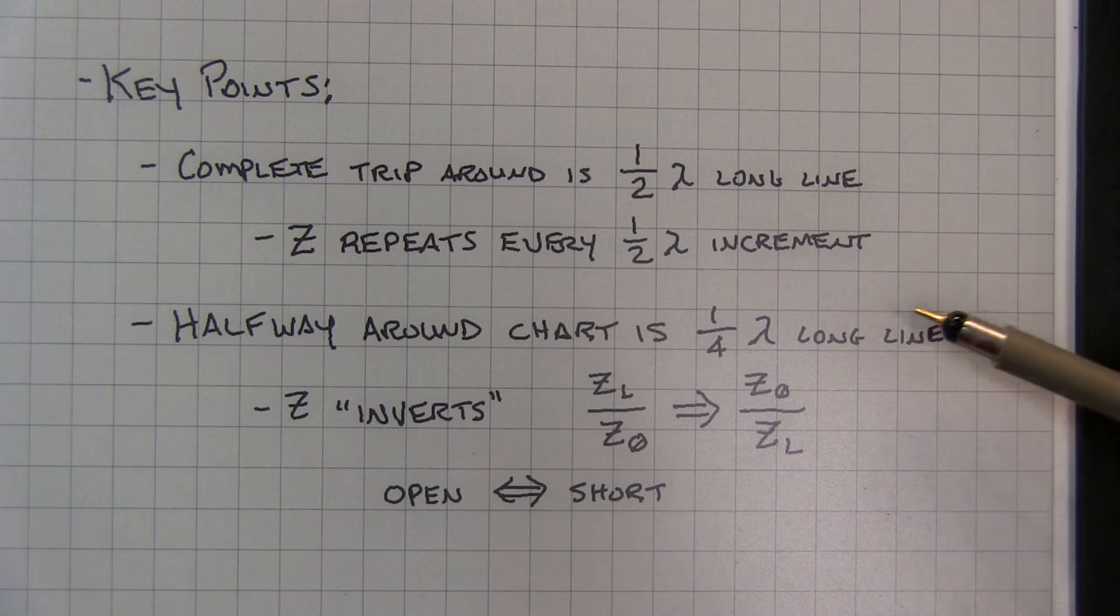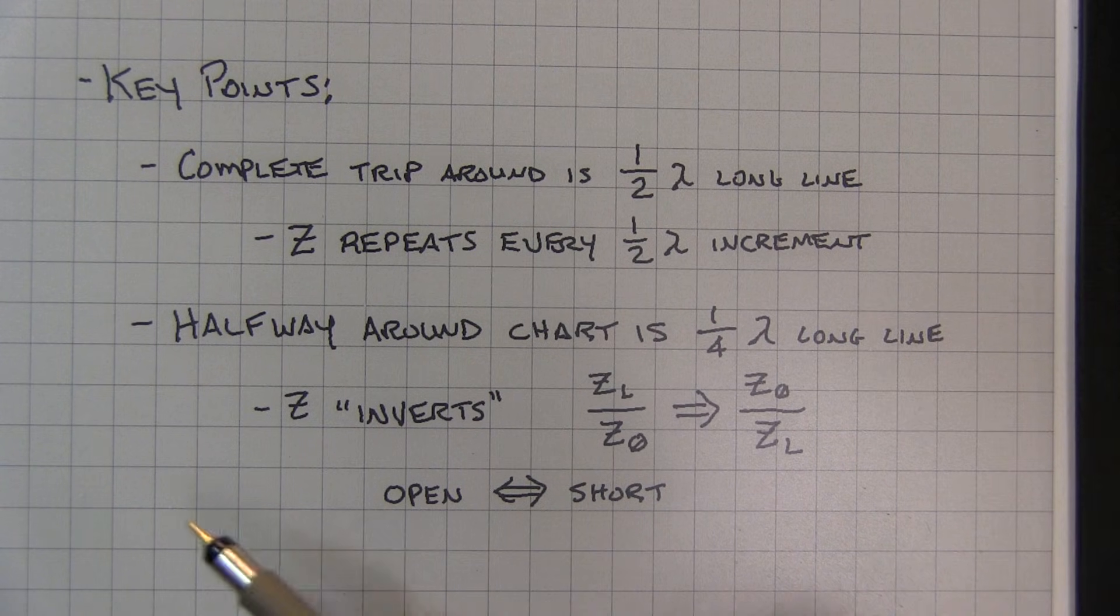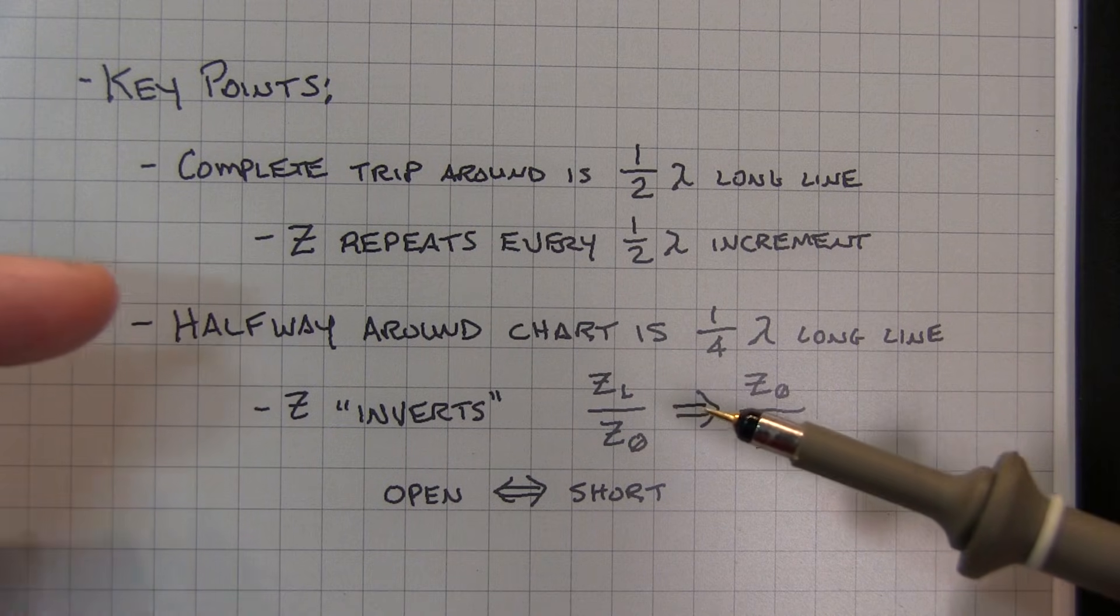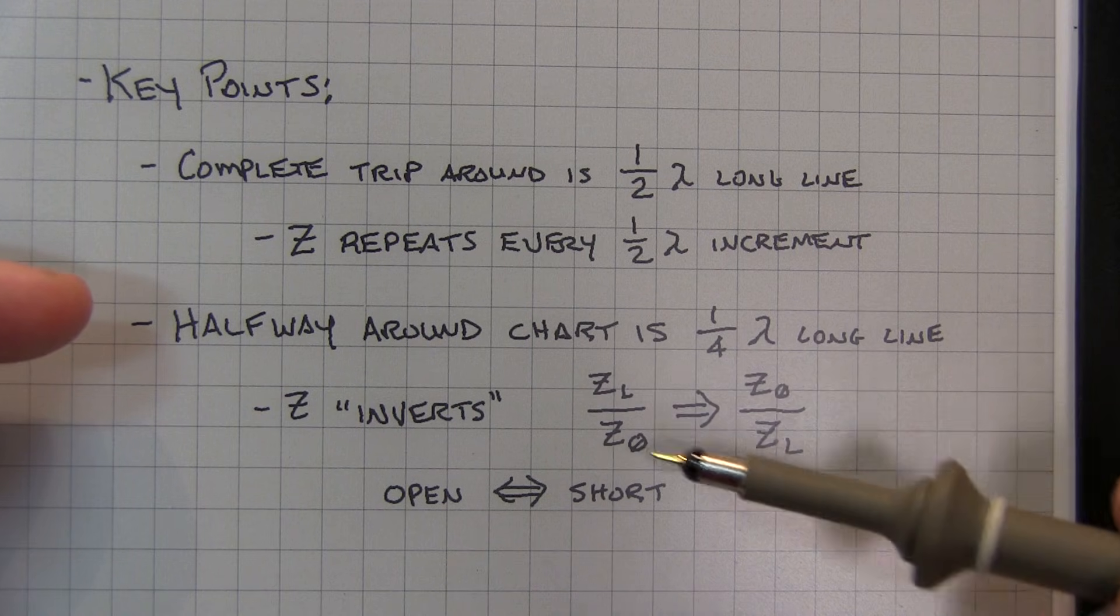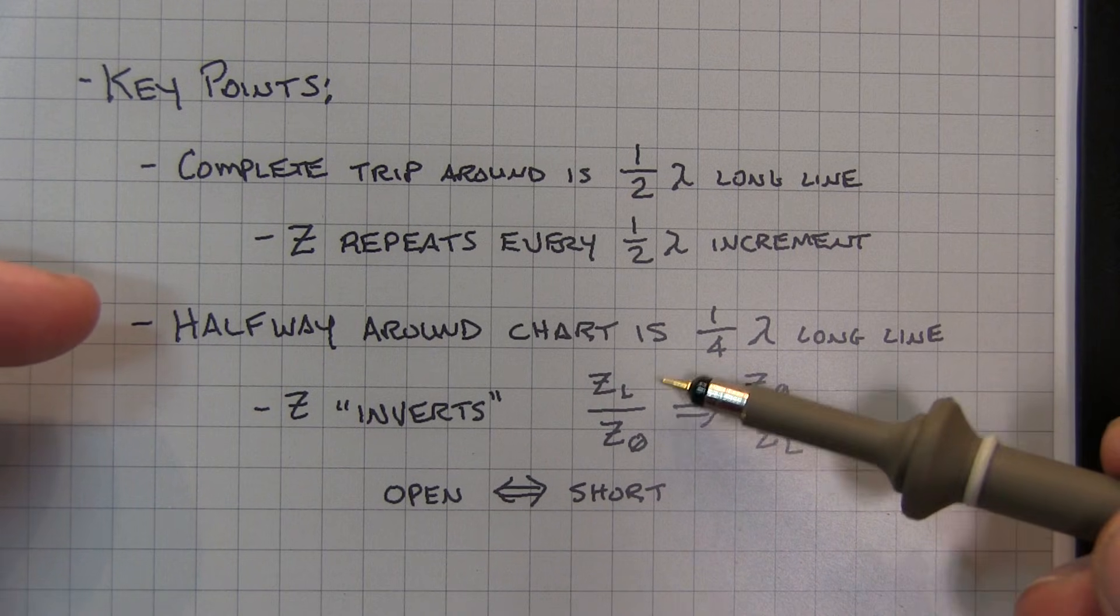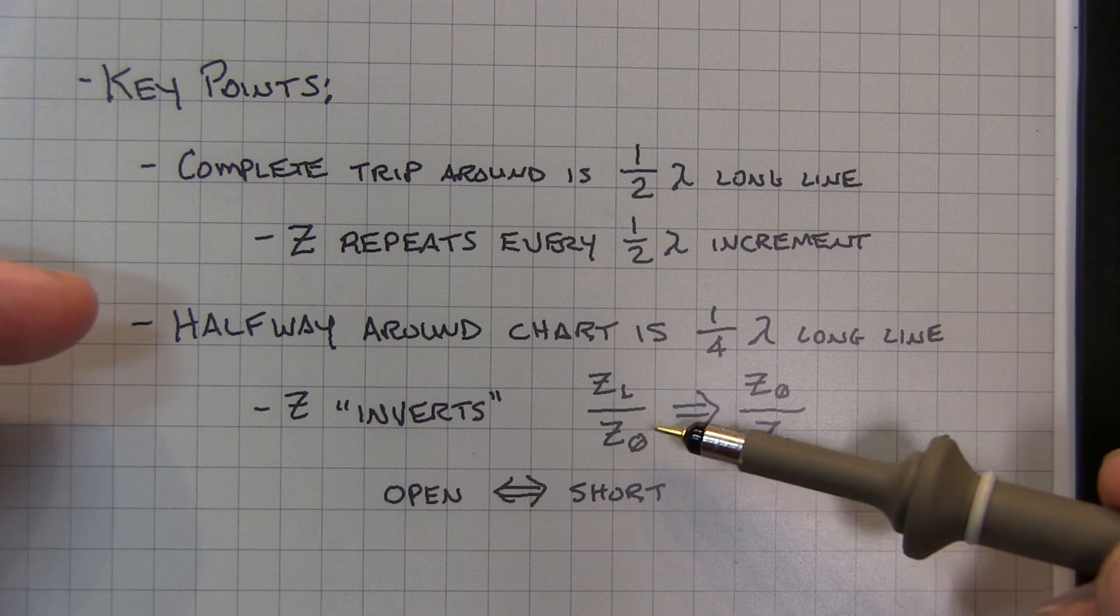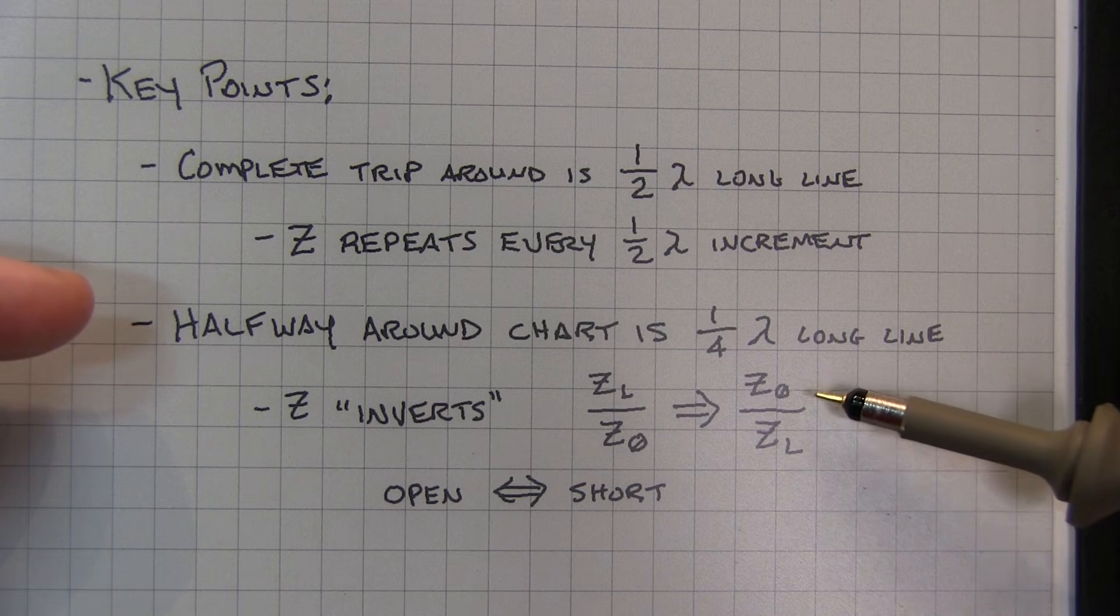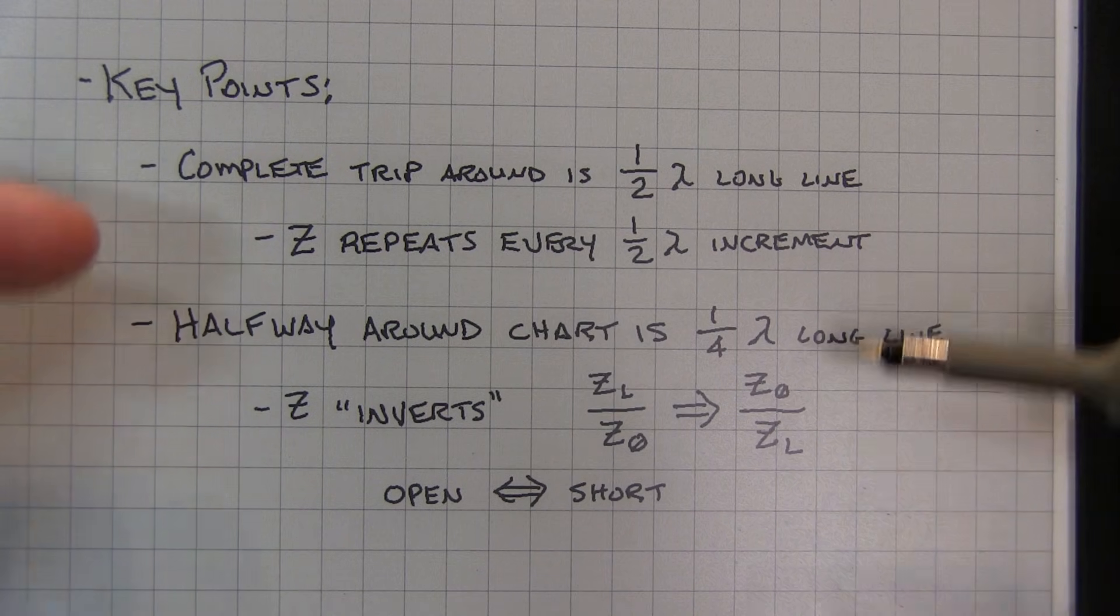The more interesting case is when you go only halfway around the chart. That's a quarter-wavelength long line. And there the impedance looking into the line effectively inverts from what's seen at the other end. The relationship is the load impedance compared to or over the reference impedance, in most cases 50 ohms, flips over to the reference impedance divided by the load. So you essentially get this inversion of the impedance.